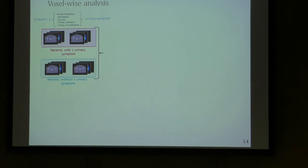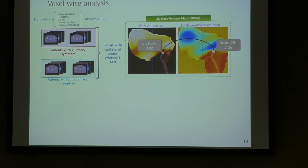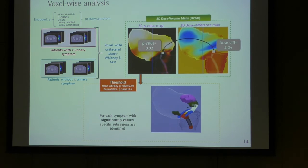The voxel-wise analysis is performed separately for each endpoint. We split the dataset between patients with and without that toxicity, and at each voxel we perform a non-parametric Mann-Whitney test. The result is a dose difference map showing the mean dose difference between patients who had toxicity and those who didn't. There is also a corresponding p-value map showing if this difference is significant. By thresholding the 3D p-value map at p = 0.01, we were able to find specific sub-regions with a statistically significant dose difference between the two populations.